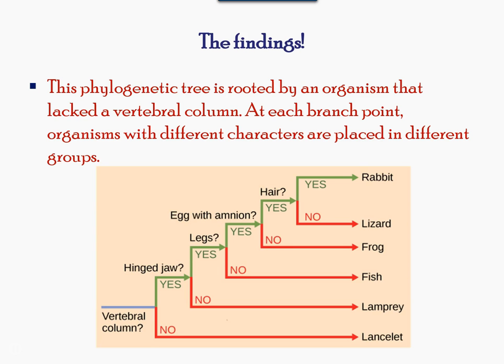The point where a split occurs in a tree is called a branch point, representing the start of a new lineage. The section where a single branch point represents a common ancestor is called rooted. When a lineage branches from a single point, they differentiate into sister taxa.